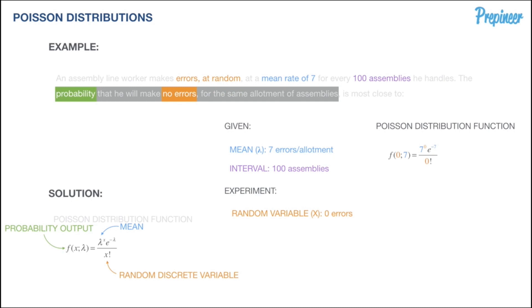If we hop into our calculator and plug that in, remember 0 factorial is a product and 0 factorial equals 1. When we push all our numbers into our calculator, we get a value of 0.000912.